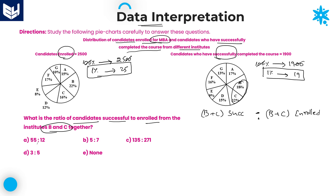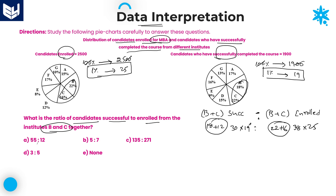The second pie chart shows successful candidates. B and C together is 18 plus 12, which is 30 percentage. One percentage is equal to 19, so 30 percentage equals 30 into 19. For enrolled candidates, B and C together is 22 plus 16, which is 38 percentage. One percentage is 25, so 38 percentage equals 38 into 25. The required ratio simplifies to 3 is to 5. Option D is the right answer.